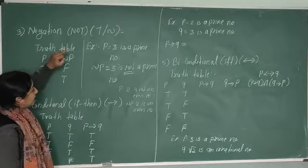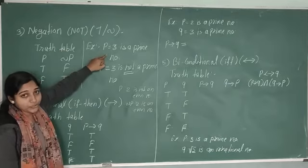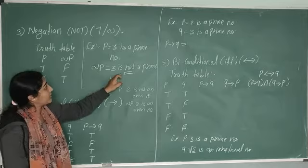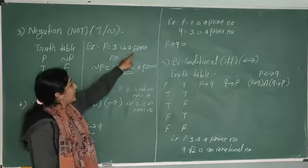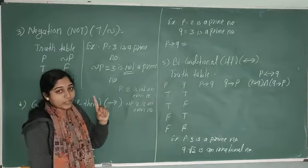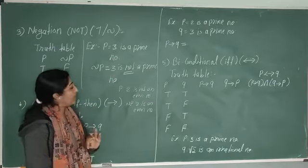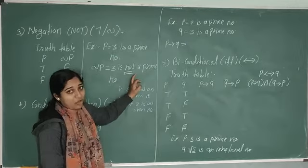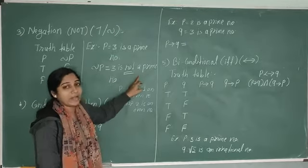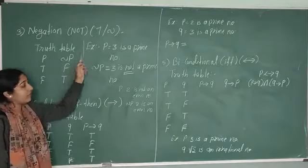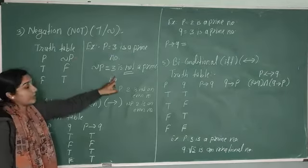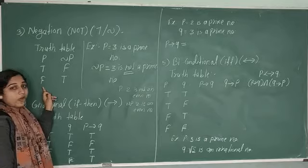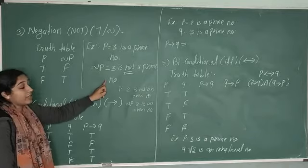Now consider the truth values. The statement '3 is a prime number' is true because we know that 3 is a prime number. So the negation '3 is not a prime number' is false. For the second example, '2 is not an even number' is false, so its negation '2 is an even number' is true.